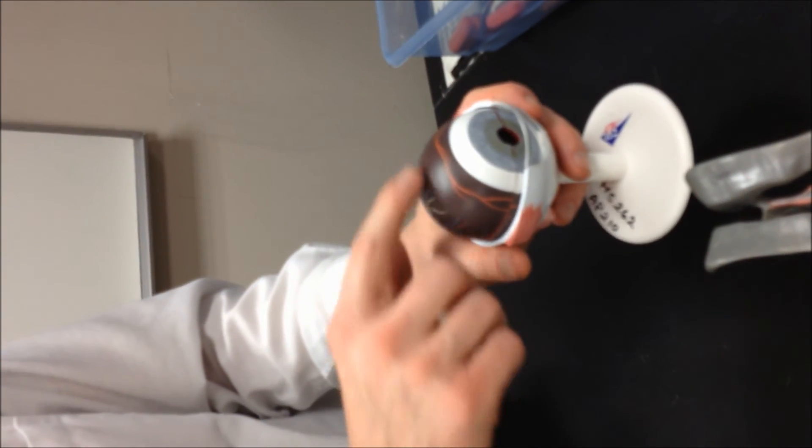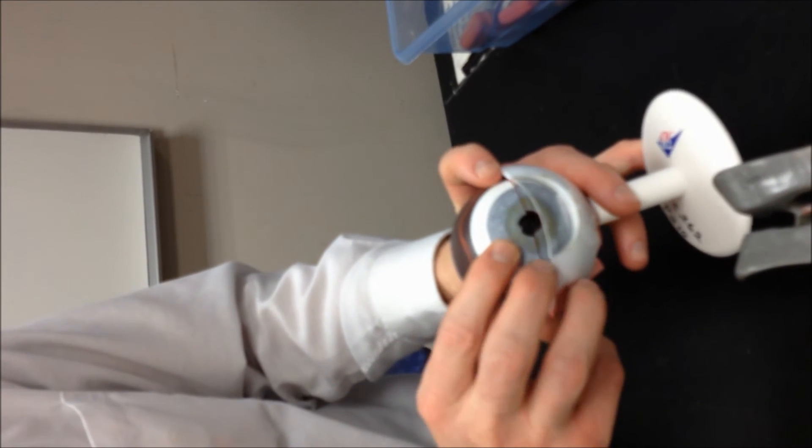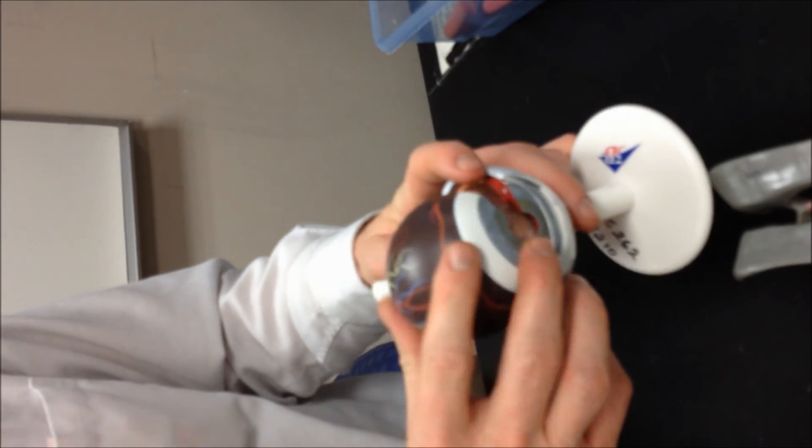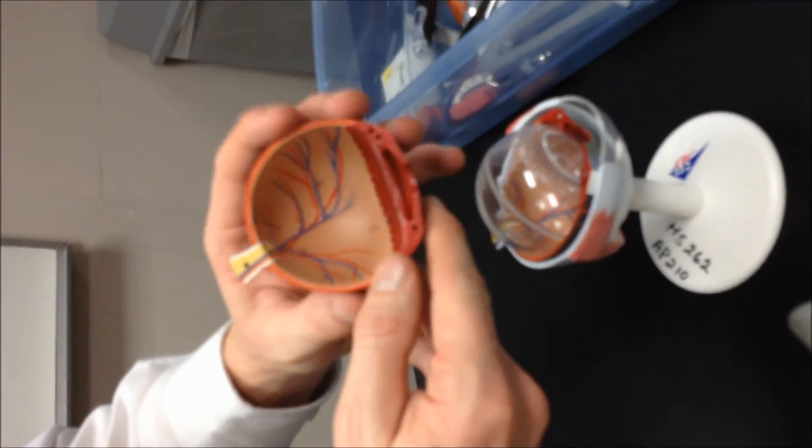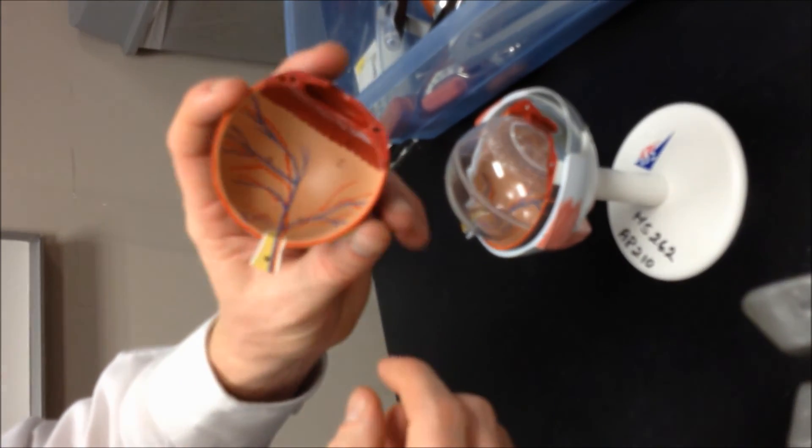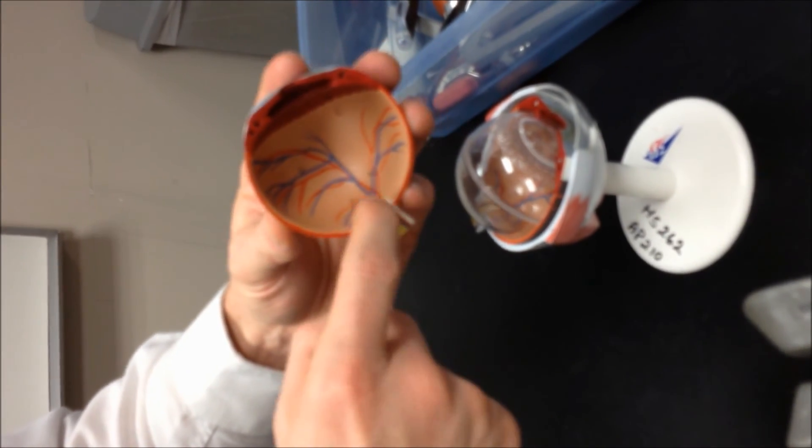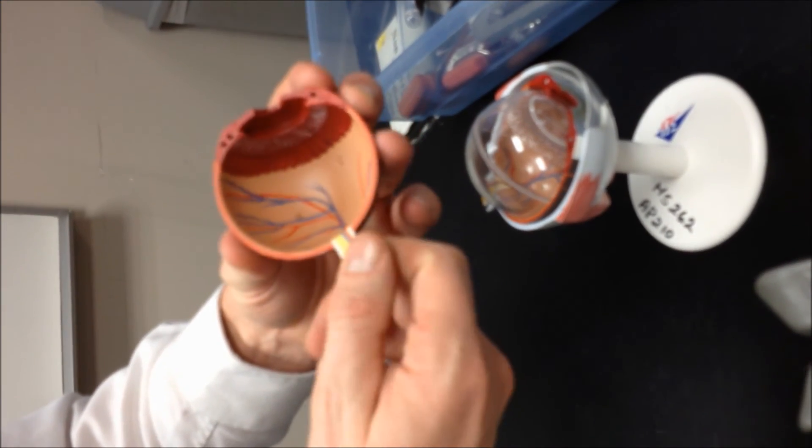All right. Take that apart. Then you'll see the choroid, the darker layer beneath the sclera. There we go. Pull that apart. So inside, you're going to have the ciliary body. And then the innermost layer is the retina. And the retina will attach to the optic disc, which becomes the optic nerve.